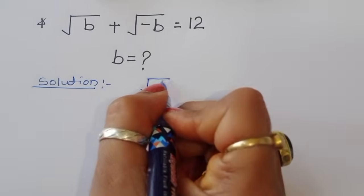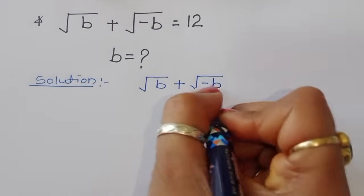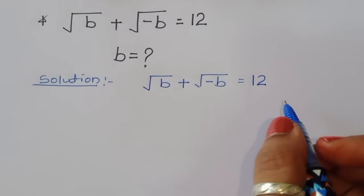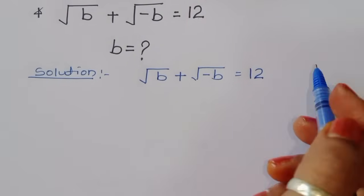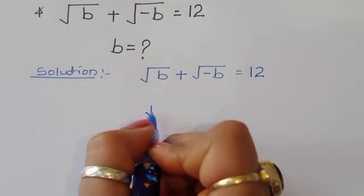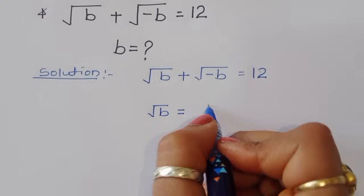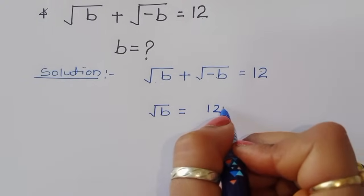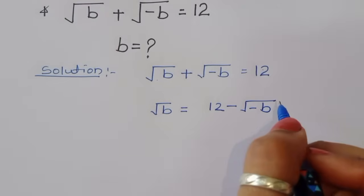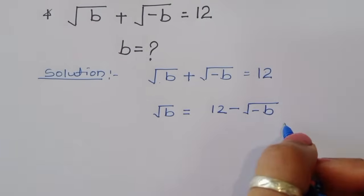Square root of b plus square root of minus b is equal to 12. This is the question given, and we have to find out the value of b. We can rearrange: square root of b is equal to 12 minus square root of minus b.